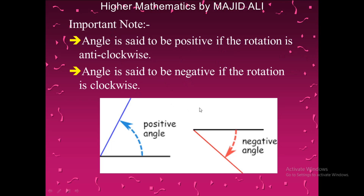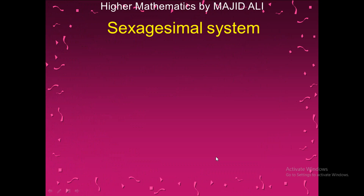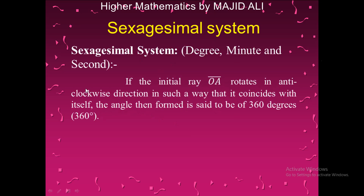We have the initial ray and the terminal ray. If the terminal ray rotates anti-clockwise, then the angle is positive. The point where both rays meet is known as the vertex. If the terminal ray rotates clockwise, then the angle is negative. This system is called the DMS system — degree, minute, and second system.